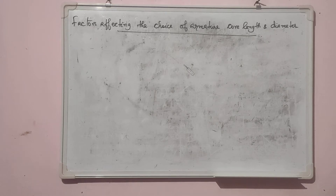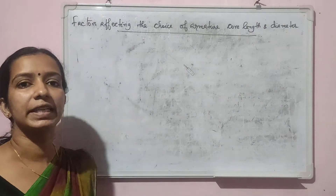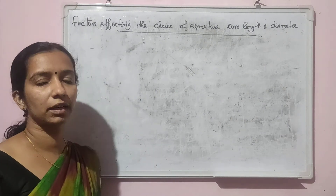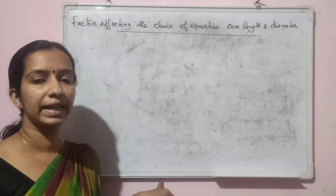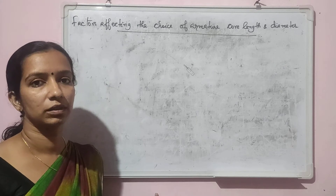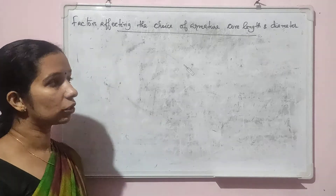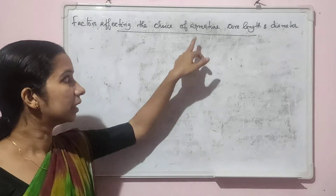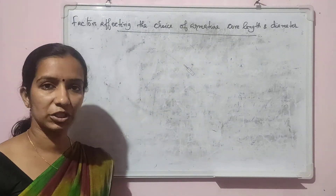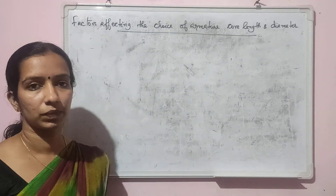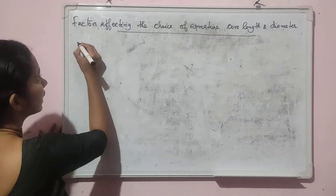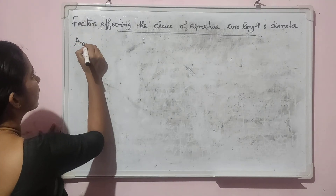In this lecture, we will be looking into the various factors affecting the choice of armature core length and armature diameter in a DC machine. So which factors have to be considered while fixing the armature core length and armature diameter? First, let us consider the factors affecting the armature core length.